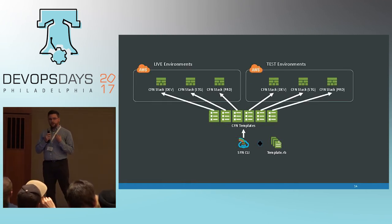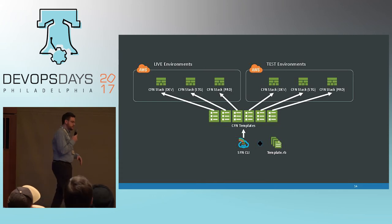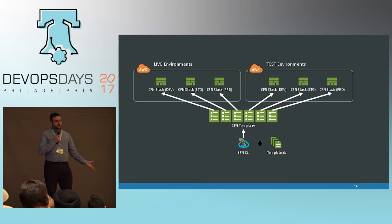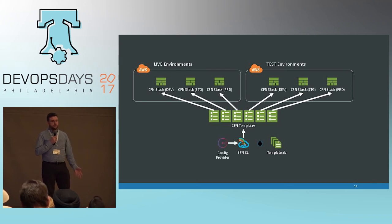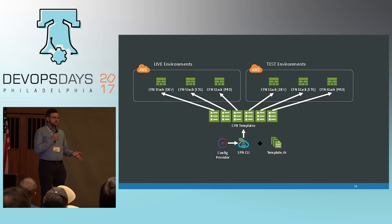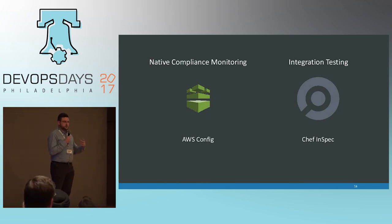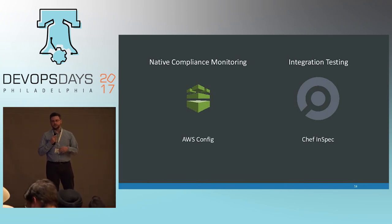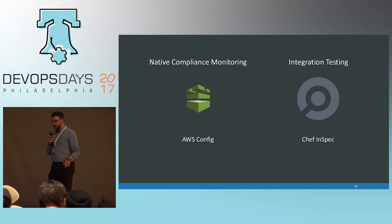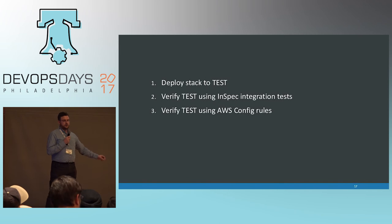We can take this up another level: all provisioned environments are live environments where developers work and customers use production. But we would have a completely separate set of infrastructure in a test set of environments, allowing us to run all changes through whatever testing we've implemented. For example, we could use native compliance tooling like AWS Config to monitor security groups and other virtual network aspects, or network integration tests written in something like Chef InSpec — all run against the test environment infrastructure to ensure changes won't disrupt live environments, including development.